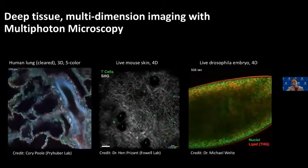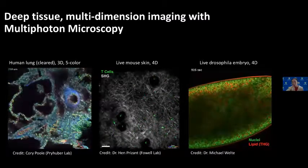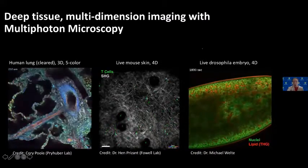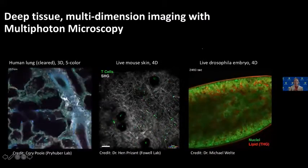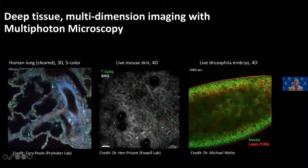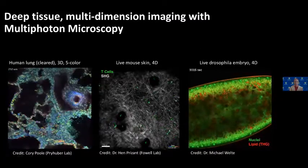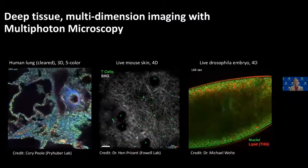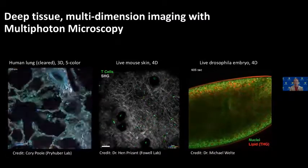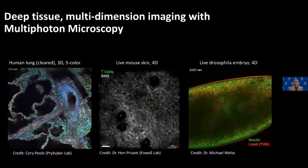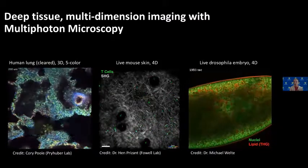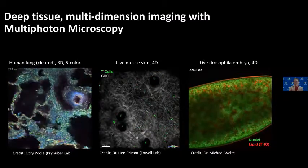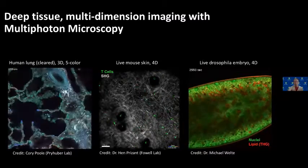The last example is another live sample — a fruit fly embryo image. This group is interested in embryo development, collecting data from the very early stage and tracking cell divisions and movement over time. With two-photon or multi-photon microscopy, the imaging is multi-dimensional — it can be 3D, 4D — and also multi-colored, adding another spectral dimension.